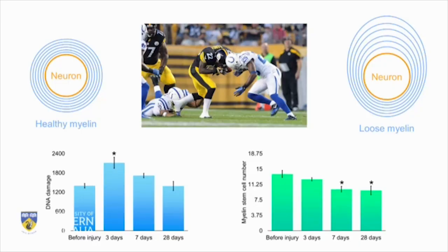One such condition is neurotrauma, that is brain and spinal cord injury. Neurotrauma can be broken into two main phases: the initial phase and the secondary phase. The initial phase may be brought about by an impact to the head as pictured in the centre. It is the secondary phase, however, that causes a majority of the devastating effects of neurotrauma, and this can last for years after the initial impact.